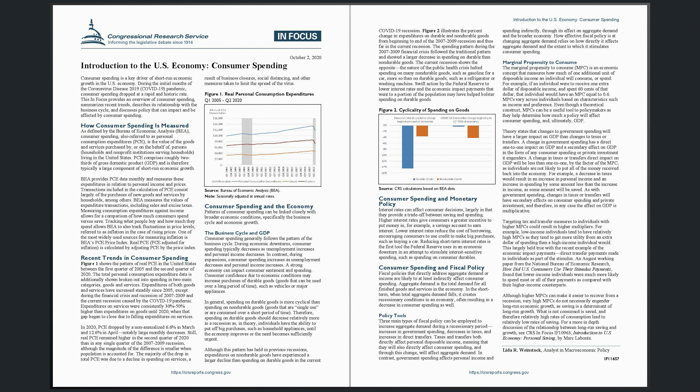In general, spending on durable goods is more cyclical than spending on non-durable goods — goods that are single-use or are consumed over a short period of time. Therefore, spending on durable goods should decrease relatively more in a recession, as individuals have the ability to put off big purchases, such as household appliances, until the economy improves or the need becomes sufficiently urgent. Although this pattern has held in previous recessions, expenditures on non-durable goods have experienced a larger decline than spending on durable goods in the current COVID-19 recession. Figure 2 illustrates the percent change in expenditures on durable and non-durable goods from beginning to end of the 2007–2009 recession and thus far in the current recession.